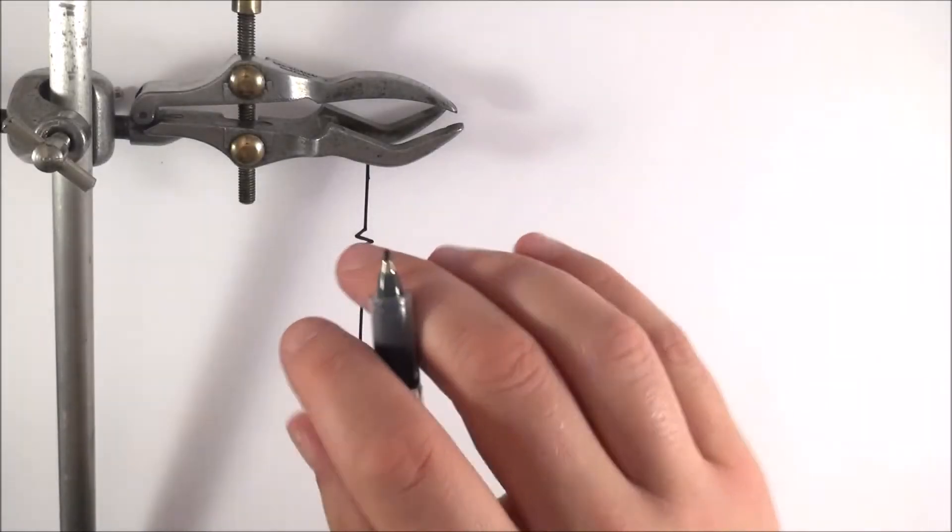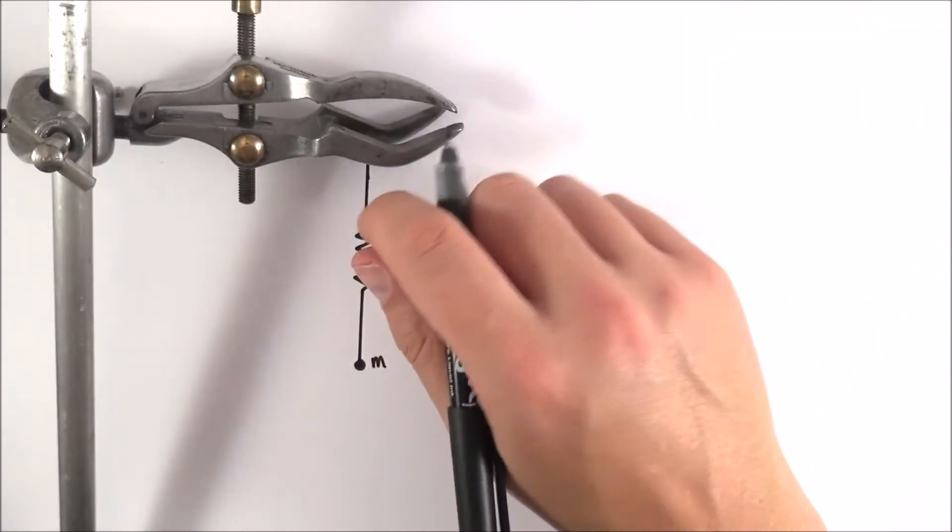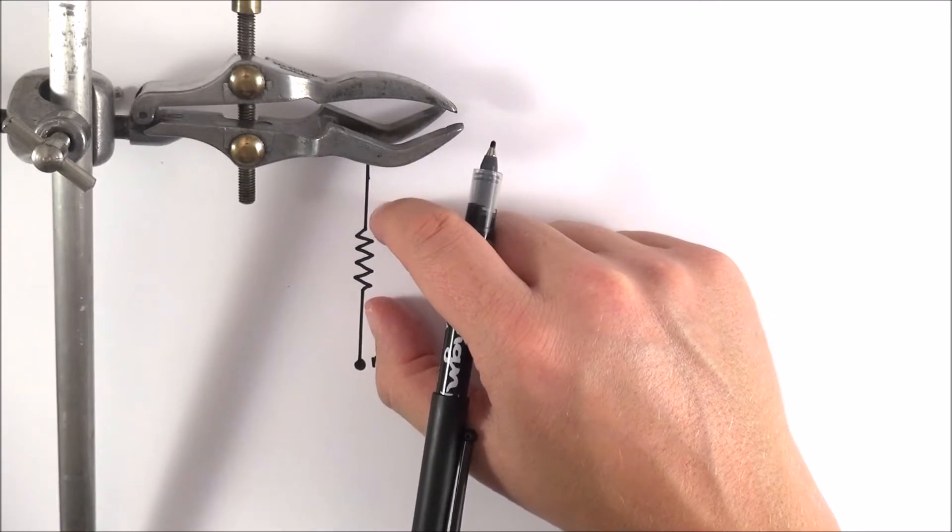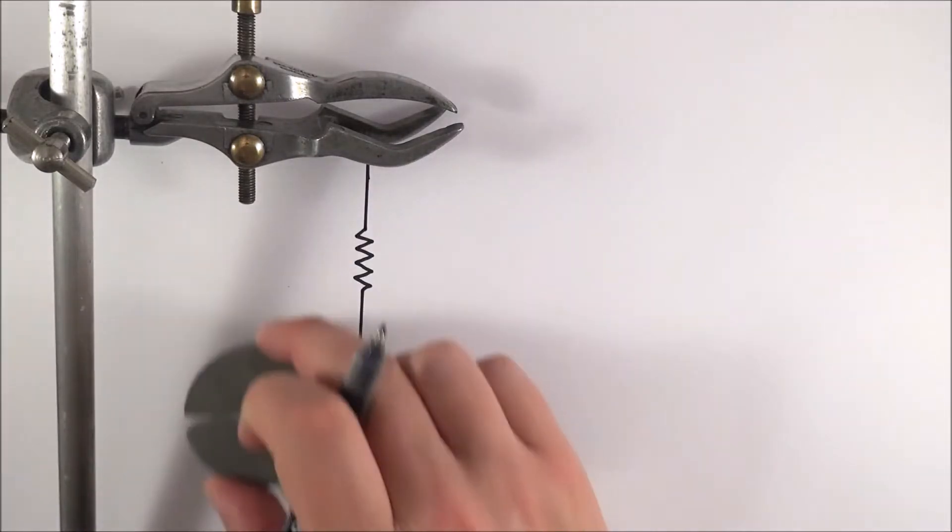So I have here a very simple setup. I have a retort stand and underneath this I'd hang a spring and on the bottom of the spring I'd put a mass.